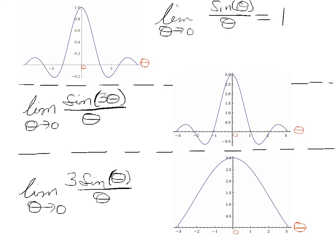So you can see that. Here's a plot of sine 3 theta over theta. And you can see that it oscillates more than 3 sine theta over theta.